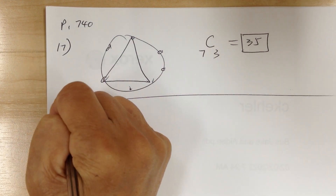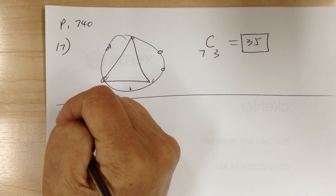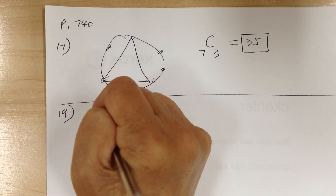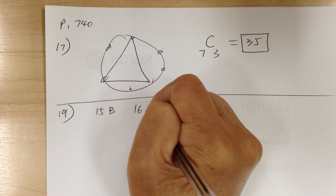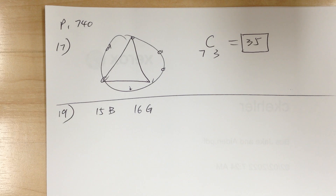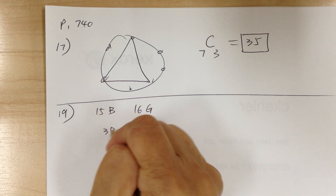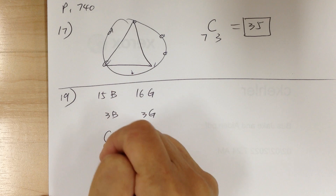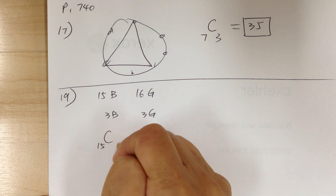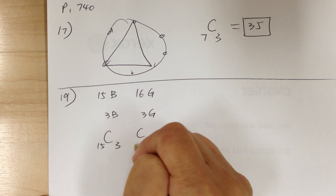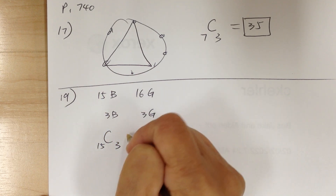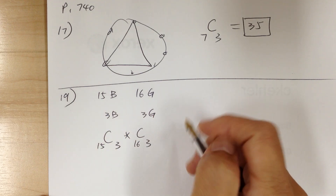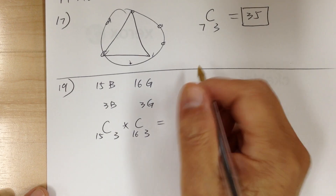Number 19: a school has 15 boys and 16 girls, and you're going to select six people with an equal number of boys and girls. That means you need three boys and three girls. For the boys, you have 15 and choose three; for the girls, you have 16 and choose three. Then you multiply them together.